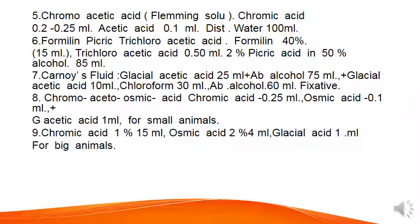Next is Chromo Acetic Acid, also known as Flemming solution: chromic acid 0.22-0.25 ml, acetic acid 0.1 ml, distilled water 100 ml. These are all mixed and used as fixative. Next is Formaline Picric Trichloroacetic Acid: formaline 40%, 15 ml, trichloroacetic acid 0.50 ml, 2% picric acid in 50% alcohol 85 ml. This is also used as a fixative.